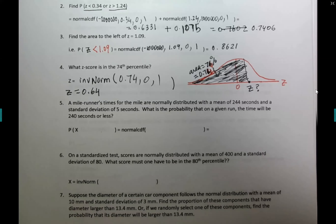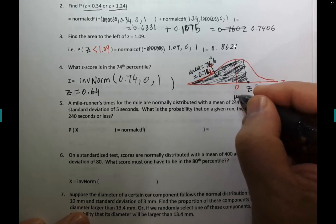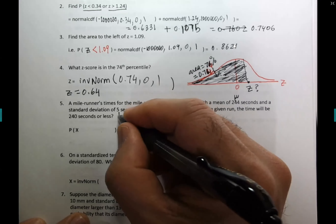Question 5: mile runners' times are normally distributed with a mean of 244 seconds and a standard deviation of 5 seconds. When the mean and standard deviation differ from 0 and 1, you are working with x, not z.